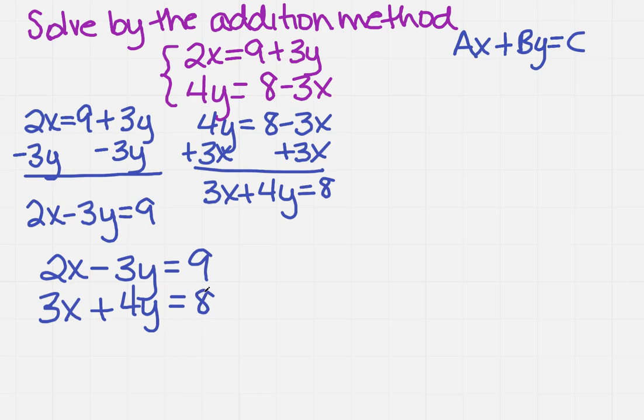Which ones already have a different sign? Well, the y's have a different sign. So I'm going to find the least common multiple, which is 12. So I'm going to multiply the top by 3 times what is 12? 4. 4 times what is 12? 3.